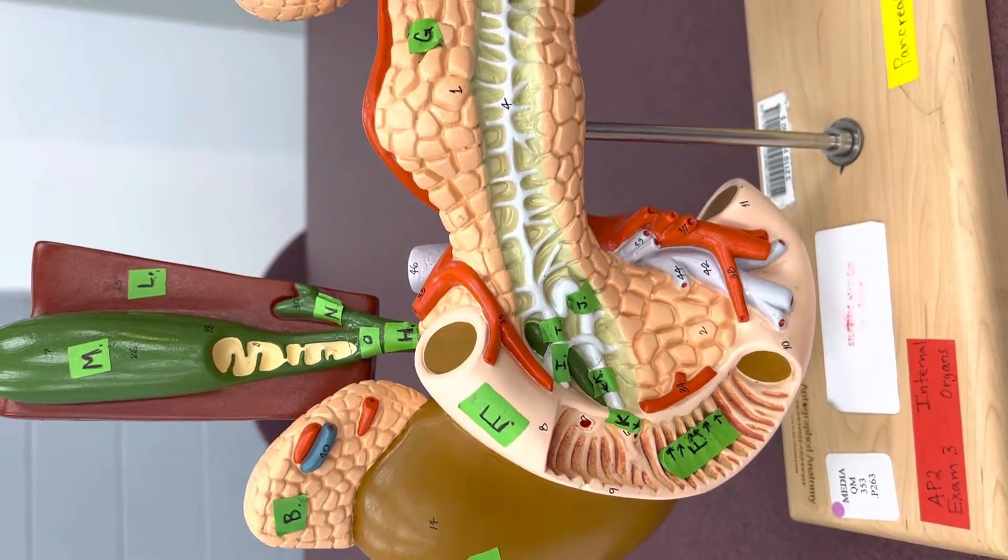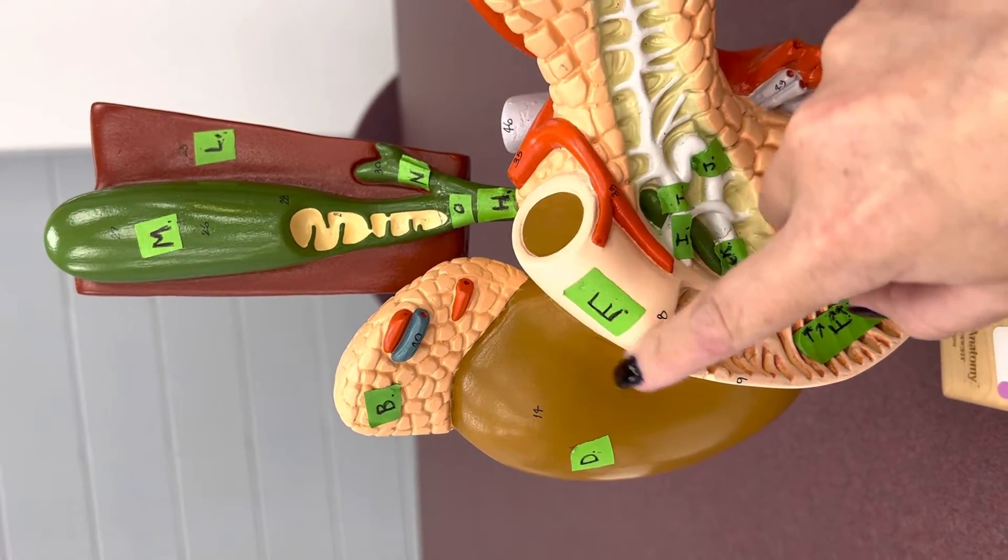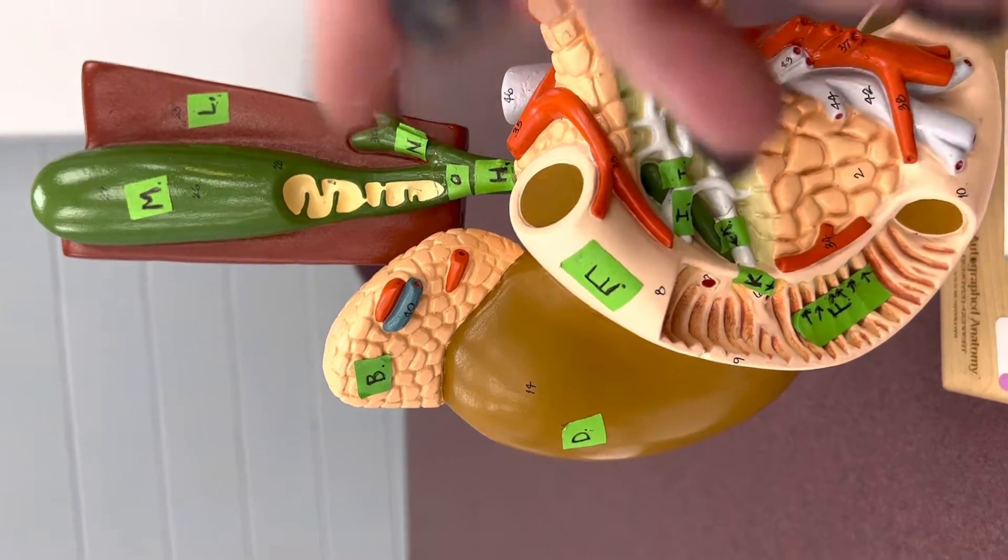The duodenum. Here we're getting into the small intestine. Coming off the stomach, this would be the pyloric sphincter going into the duodenum. That's the first portion of the small intestine.